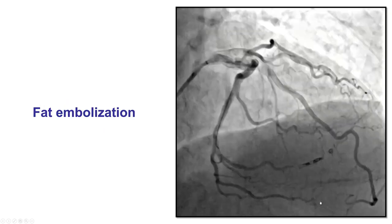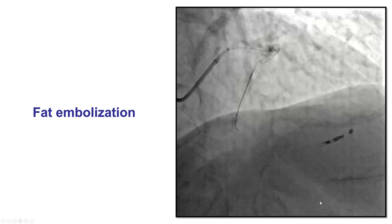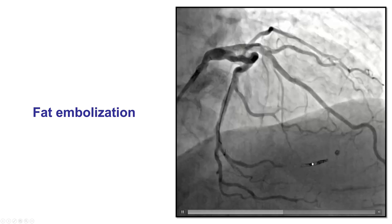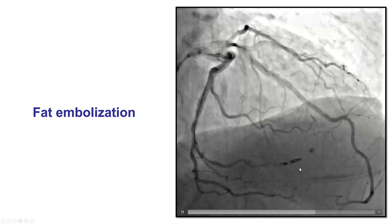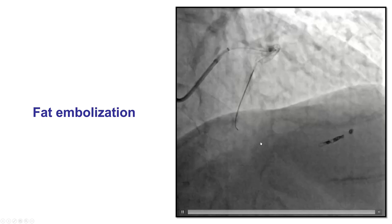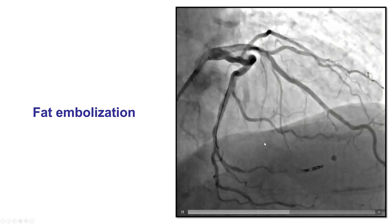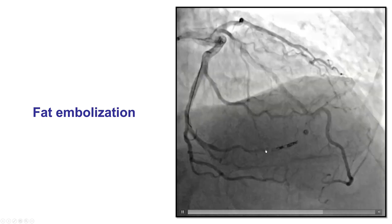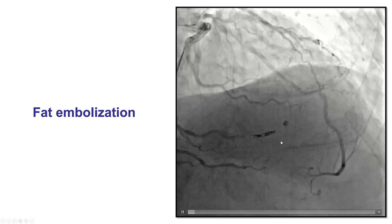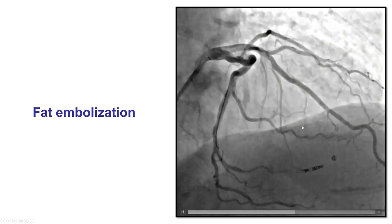We decided to also perform fat embolization on top of the coils. We used the Finecross, which pushed the coil a little further down, and then delivered two pieces of fat harvested from the femoral access site. That resulted in good hemostasis with no more bleeding into the pericardium.